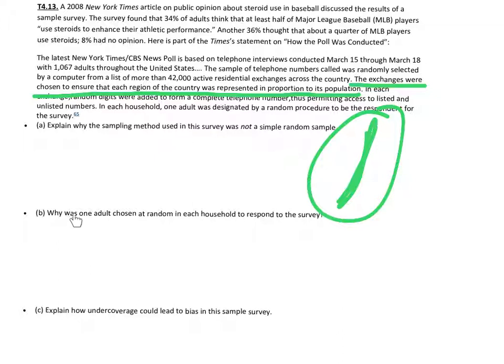Part B: Why was one adult chosen at random in each household to represent the survey? The reason they randomly chose a respondent within each household was to control for lurking variables. A potential lurking variable is that household members who generally answer the phone may have a different opinion from those who don't. To control for always getting the same person who answers the phone, they randomly picked someone to control for that lurking variable.